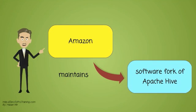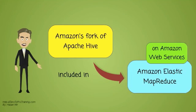Amazon maintains a software fork of Apache Hive. It is included in Amazon Elastic Map Reduce on Amazon Web Services.